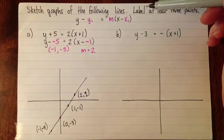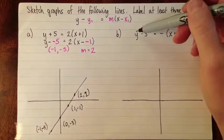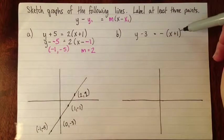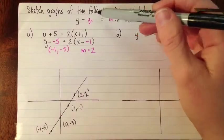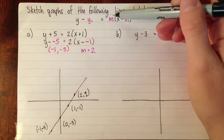Okay, so let's take a look at this one. We've got y - 3 = -(x + 1). And the first thing I'm going to do is just rewrite it again with the pink to highlight what the coordinates of the point are and what the slope is.